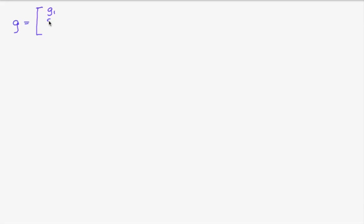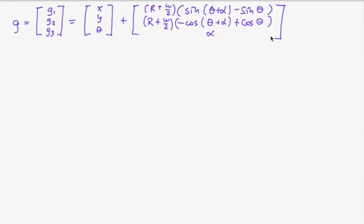So our function g just g1 g2 g3 is xy theta plus those terms. And now we have to compute the partial derivative of g1 with respect to l. Now there is no l in those equations because it is hidden in r. So r was l divided by alpha and alpha was r minus l divided by w. So we see that r equals l w divided by r minus l. And so the term r plus w half.